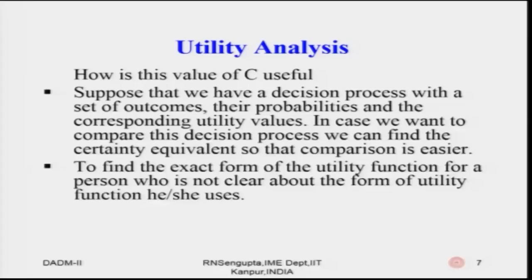Finding the certainty equivalent also helps identify the utility function for a person. The values of A, A prime, R, R prime give some information about the utility function, but the certainty value would also help us find out what type of utility function the person has.